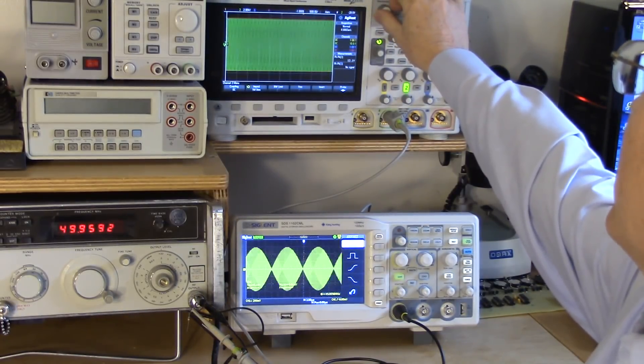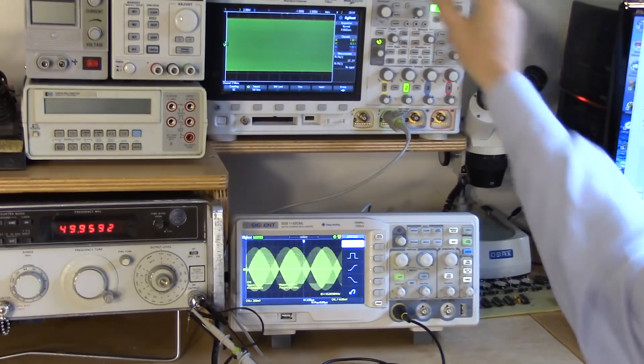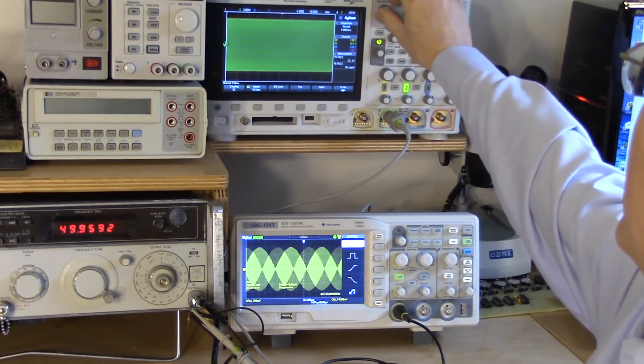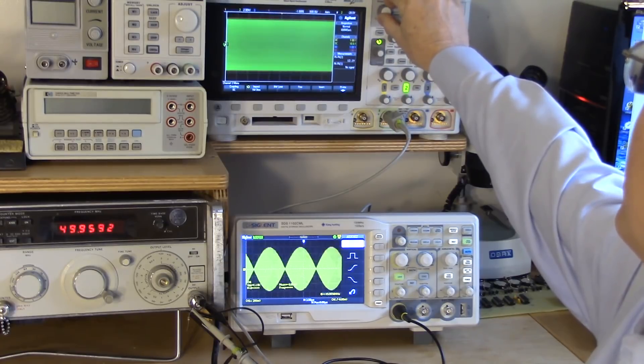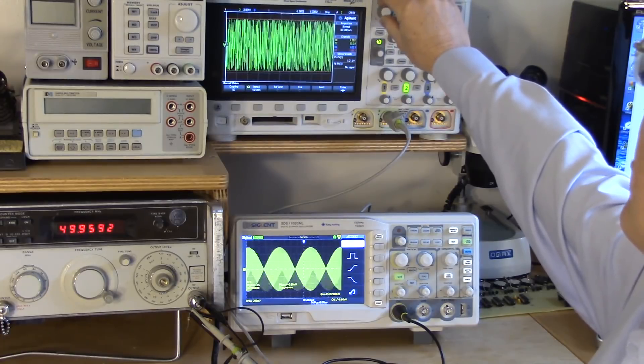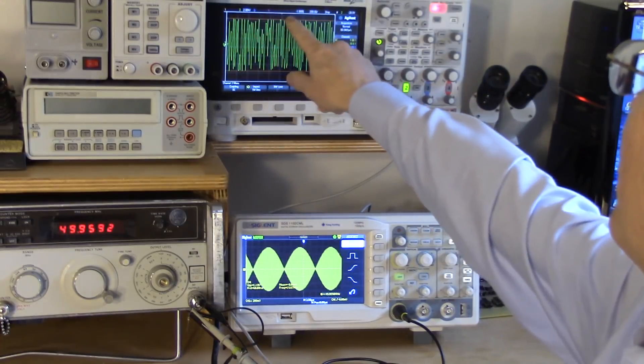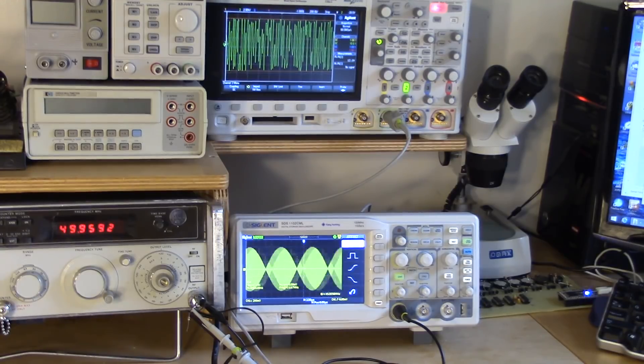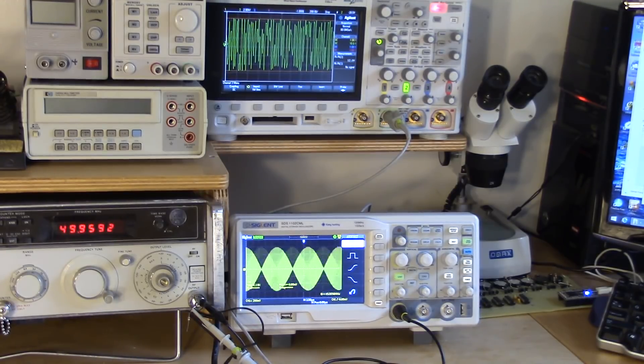If we look at the Agilent, which doesn't show that effect because it's a much faster scope, it samples at a much higher rate. But if I crank it down to reduce the sample rate, and I'll just freeze the display, and then I'll crank it back up, you can see the same sorts of artifacts starting to appear there. And the point here is that you really have to know what your test equipment is doing to use it effectively.